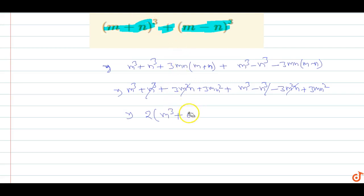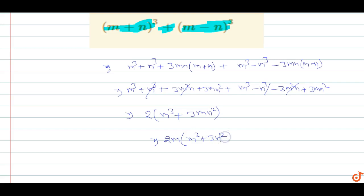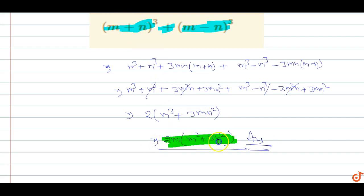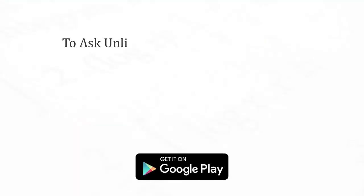Taking 2m as a common factor, we get 2m(m² + 3n²). So the final answer is: (m+n)³ + (m-n)³ = 2m(m² + 3n²).